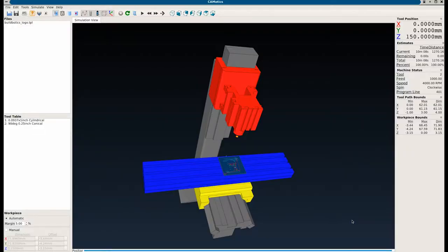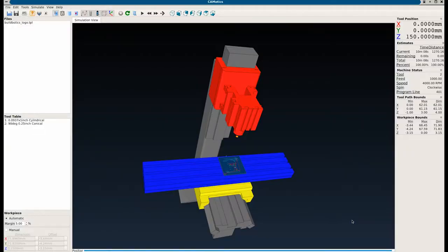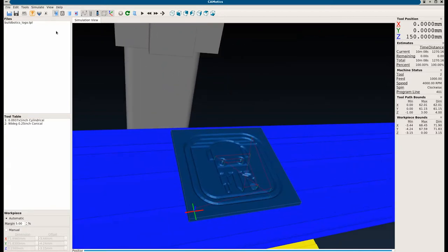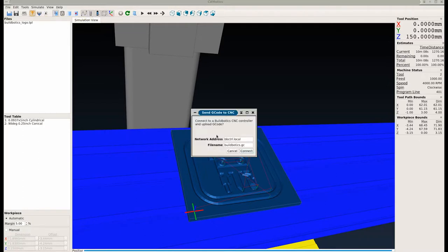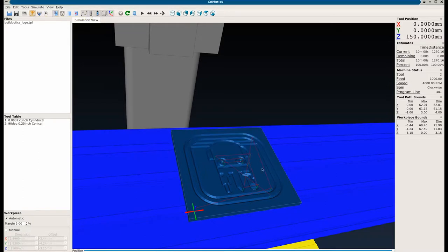Here's the simulation of our cut in Camotics. Camotics is an open source CNC simulator that we've been developing over the last six years. By clicking this button, we can send the G-code directly to the BuildBotics controller over the network.